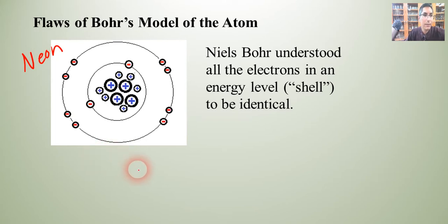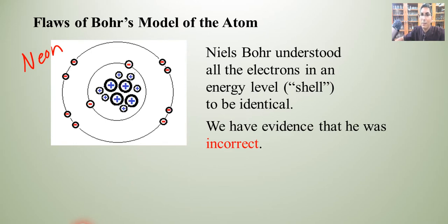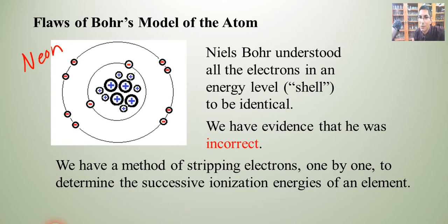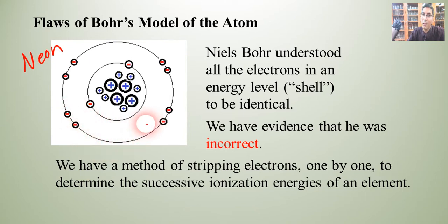Today we know that's not the case. We have evidence that the Bohr model was actually incorrect, because today we have this method of stripping electrons away from a nucleus one by one to determine the successive ionization energies of an element. Since neon has ten electrons, we can strip every one of those electrons away and calculate a first through tenth ionization energy. We found that it actually takes more energy to strip away some electrons than others, and this is what photoelectron spectroscopy has shown us.